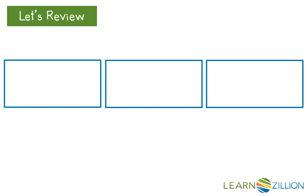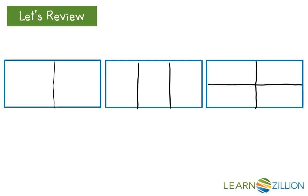We can think of a rectangle as one whole, and we can partition this whole into two, three, or four equal shares and describe each share as halves, thirds, or fourths. On the left, I have one whole that was partitioned into two equal parts, with each region being described as one-half of the whole.